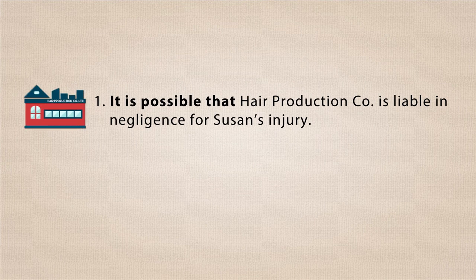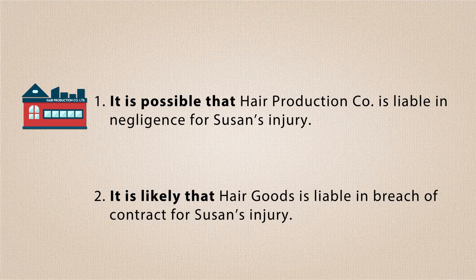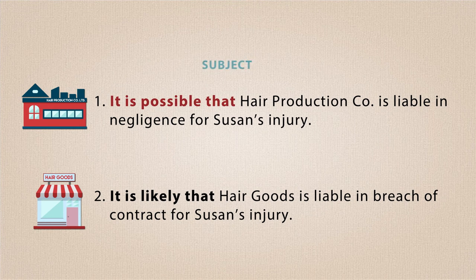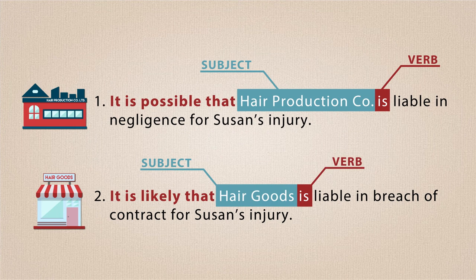You can also use other modal phrases to raise the issue implicitly. For example: 'It is possible that hair production company is liable in negligence for Susan's injury.' Or: 'It is likely that hair goods is liable in breach of contract for Susan's injury.' The phrase 'it is possible that' is followed by a subject, then a verb. The phrase 'it is likely that' is also followed by a subject, then a verb. Of course, the second of these phrases shows a stronger commitment or belief, so remember to choose your words carefully.